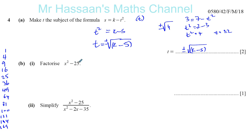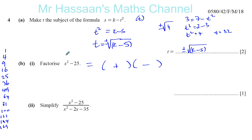So x squared minus 25 is a difference between two squares. Whenever you have two squared terms with a minus between them, it's a difference of two squares. When you factorize it, it goes into two brackets - one bracket has a plus between the two terms and the other has a minus. You simply write the square root of each term: the square root of x squared is x, and the square root of 25 is 5. So you get x plus 5 times x minus 5.